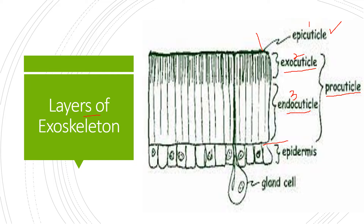If we talk about the composition of the four layers of the exoskeleton, these layers are mainly a combination of lipids, protein, chitin, and calcium salts that constitute all four layers. You can also see that there is an epidermis present — the epidermis is a layer of skin. From the diagram it is clear that the exoskeleton is present outside the skin.